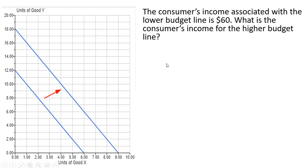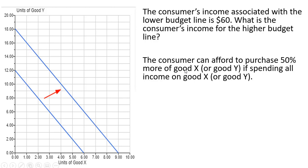Another problem. Here we have a budget line that increases. The consumer's income associated with the lower budget line is $60. What is the consumer's income for the higher budget line? The consumer can afford to purchase 50% more of good X or good Y if spending all income on good X or good Y.